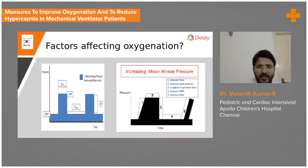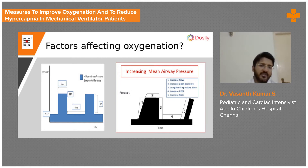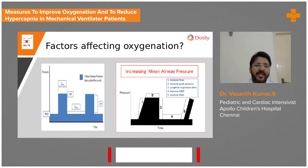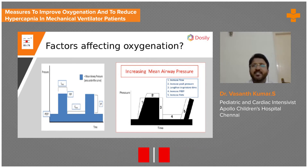Now for a very important graphic you have to remember: this explains what factors affect oxygenation. The key concept is mean airway pressure — mean airway pressure is the one which determines oxygenation in any patient on a ventilator.